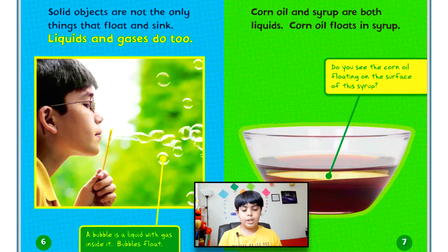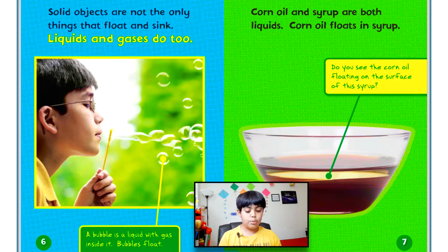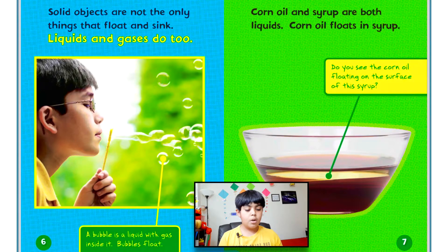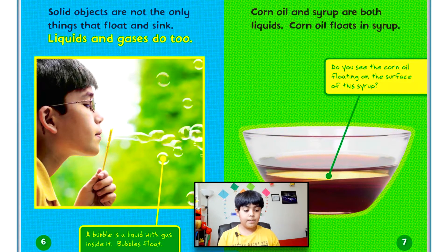Solid objects are not the only things that float and sink — liquids and gases do too. A bubble is a liquid with gas inside it. Bubbles float. Corn oil and syrup are both liquids. Corn oil floats in syrup. Do you see the corn oil floating on the surface of the syrup?